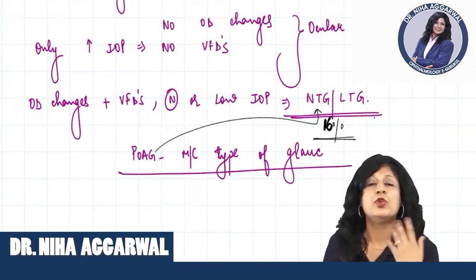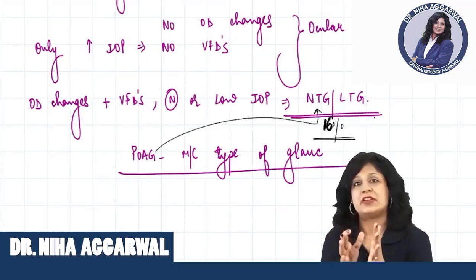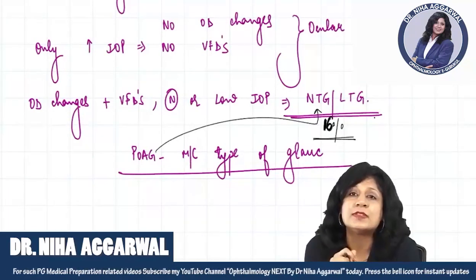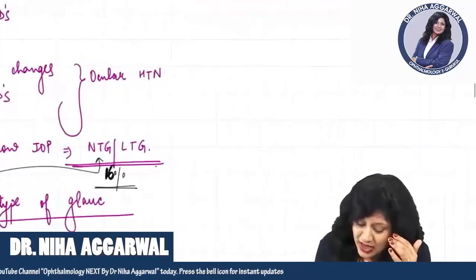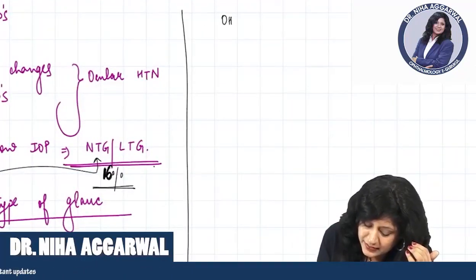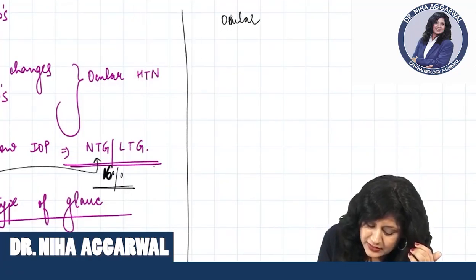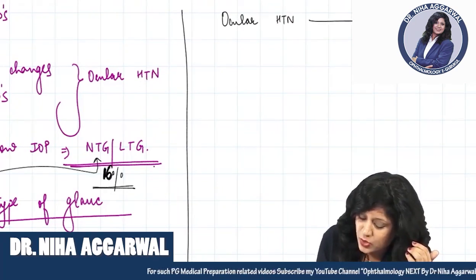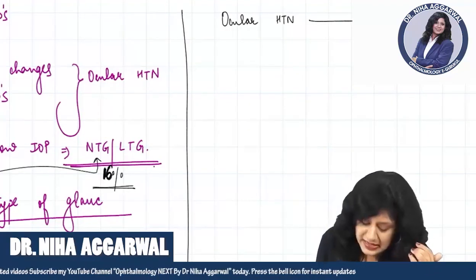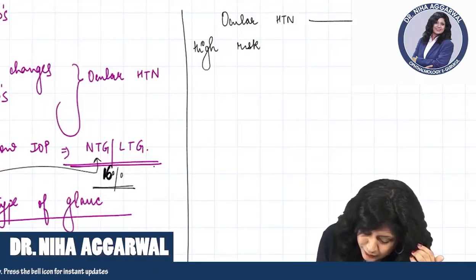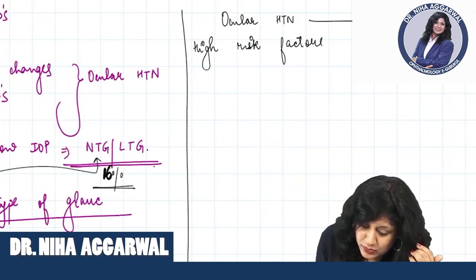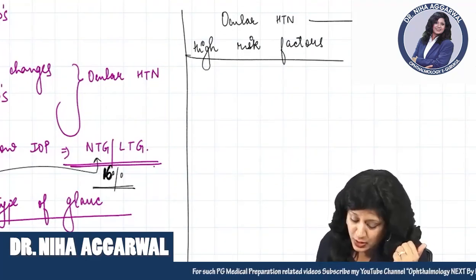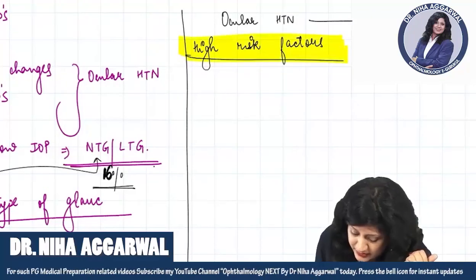There are certain school of thoughts about whether we should treat ocular hypertension. Yes, ocular hypertension patients have chances of conversion to primary open angle glaucoma if they have high risk factors. So if they have high risk factors, we have to treat them because they have the chances of getting converted into frank POAG. What are these high risk factors?